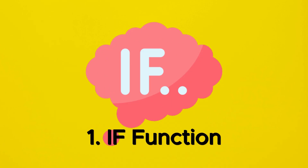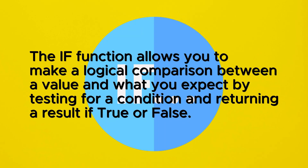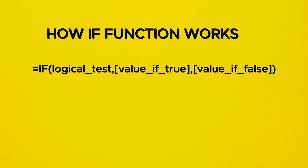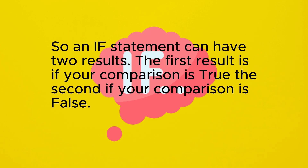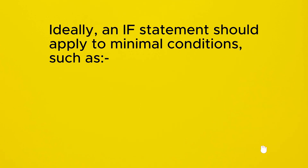The IF function allows you to make a logical comparison between a value and what you expect by testing for a condition and returning a result if true or false. The IF function has three arguments: a logical test, value if true, and value if false. In simple language, it reads: if something is true, then do something; otherwise, do something else. An IF statement can have two results — the first if your comparison is true, and the second if your comparison is false.